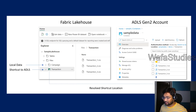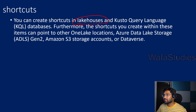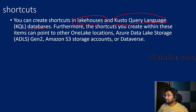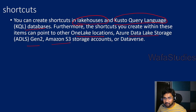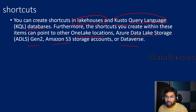Where can you create shortcuts? You can create shortcuts in lakehouses. We have seen how to create a lakehouse in our previous video. Similar to lakehouses, you can also create KQL databases in Fabric, and even in KQL databases you can create shortcuts. Shortcuts can point to either a OneLake location, a Gen2 storage account, Amazon S3 bucket, or a Dataverse. The shortcut is placed in OneLake — meaning within Fabric — and it will be available for you there.